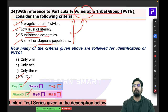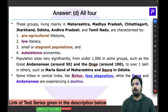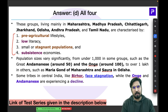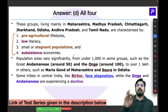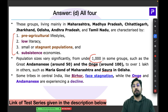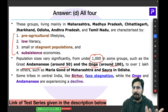All four criteria logically contribute to the vulnerability of tribal populations, so all are correct. This was an easy question that could be answered by understanding the meaning of vulnerability. Many tribal groups in India have populations below 1000 — for example, the Great Andamanese have just 50 individuals and the Onge only around 100.